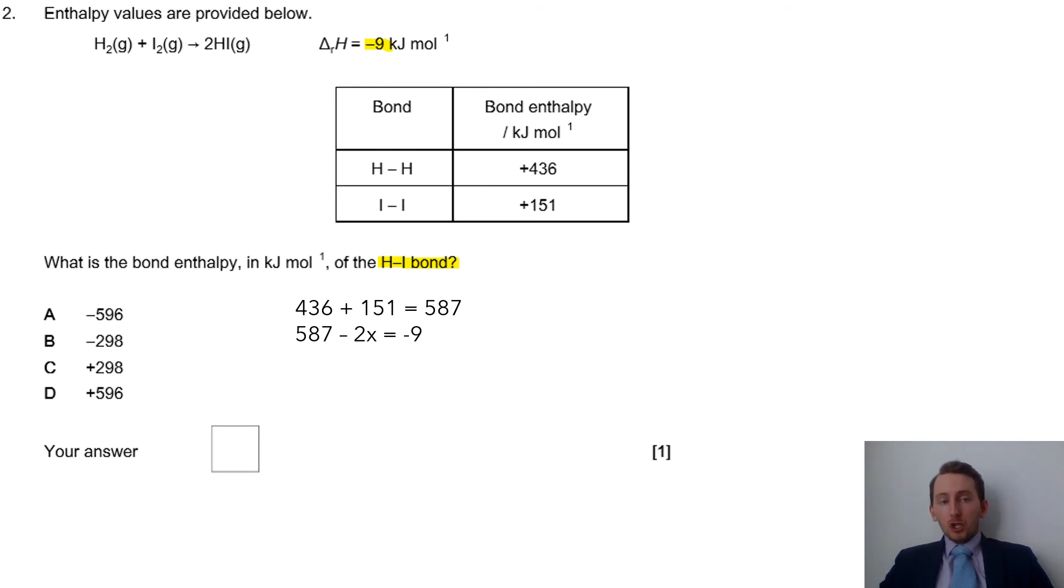Now, the reason why it's 2X is because I have two lots of them. That's why they give me that equation there to use. So, we have two lots. We have two H to I bonds. We have to find the value of one of those.